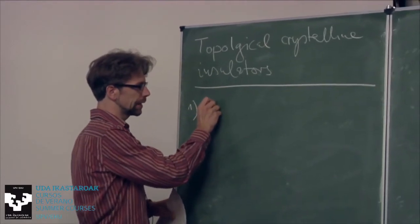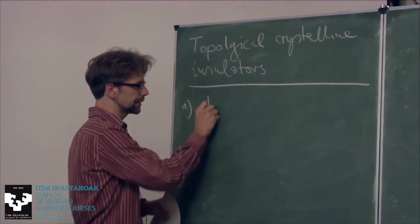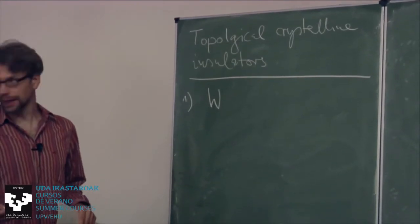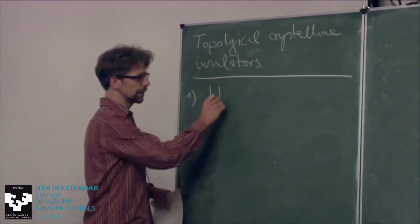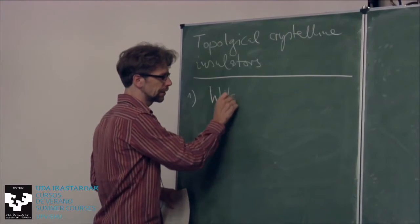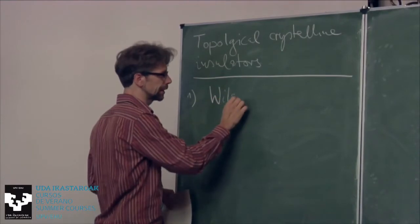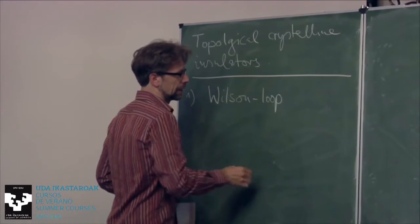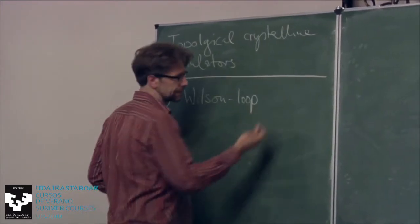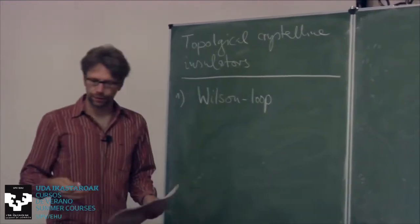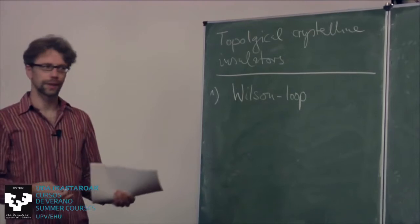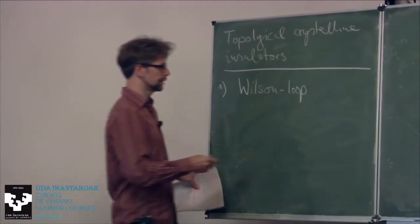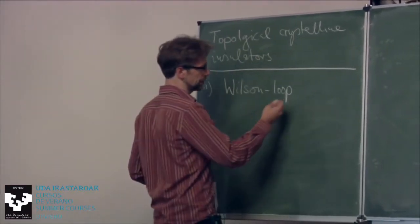In particular, I'll basically connect to what Ivo did yesterday and talk about the Wilson loop characterization of topological phases. This is a very convenient standpoint to understand bulk-boundary correspondence and the bulk topological character of topological insulators.